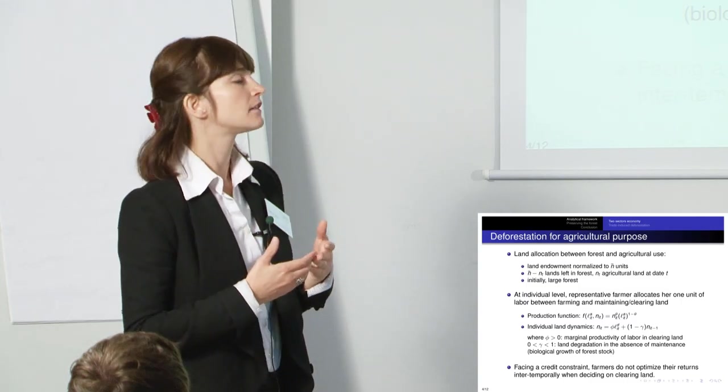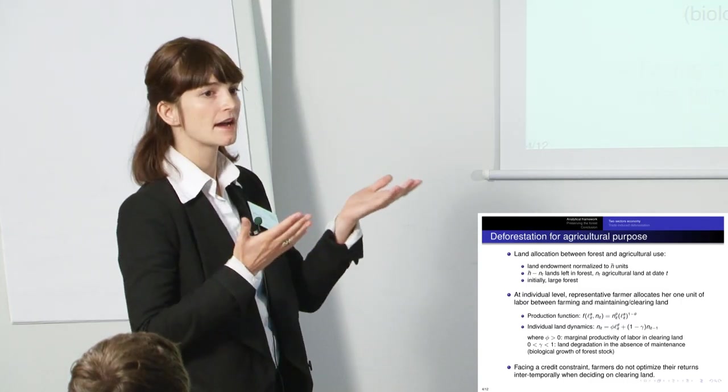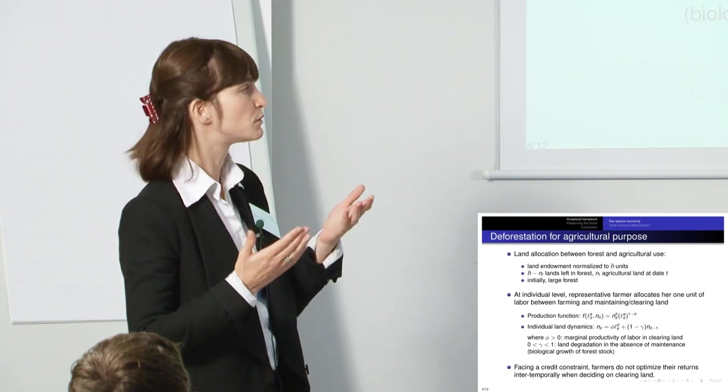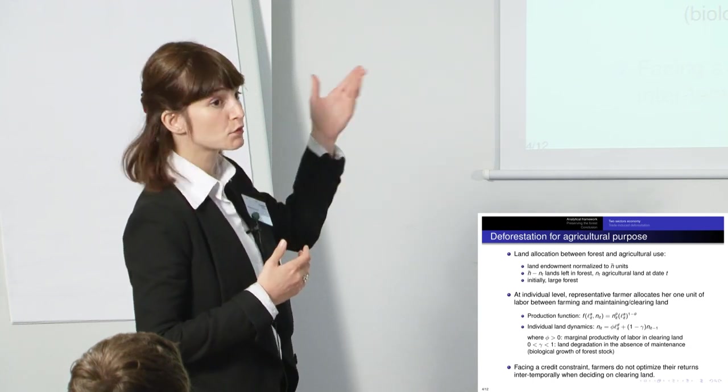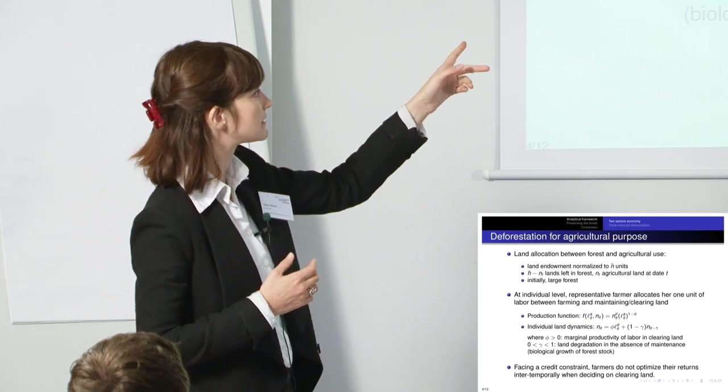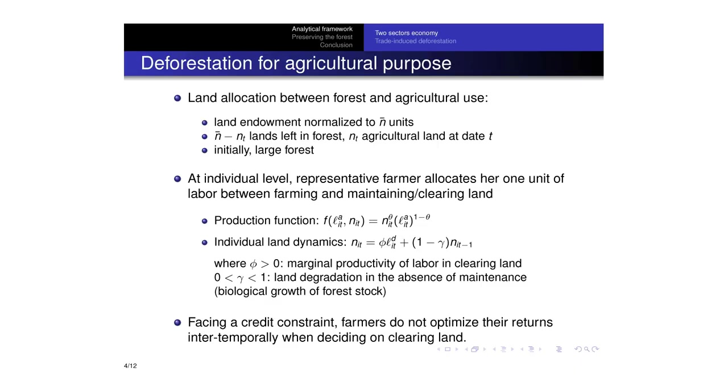At the individual level, each farmer decides how they allocate their labour between production. And here you can see, it's simply a Cobb-Douglas function where you use your land and some labour, LA, in order to produce and both inputs are necessary.